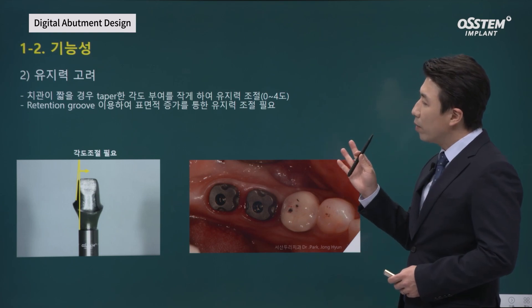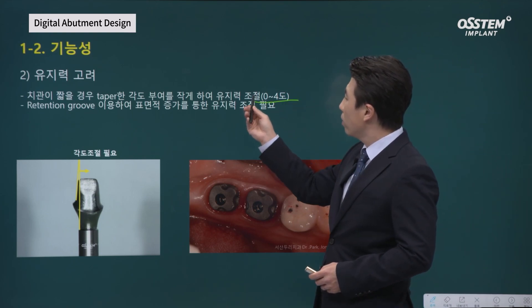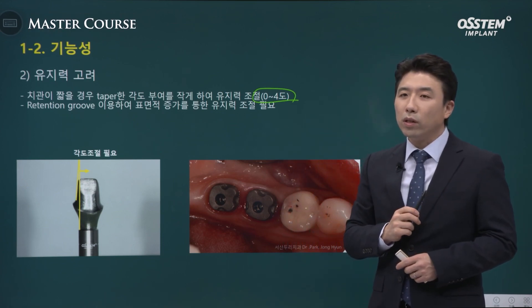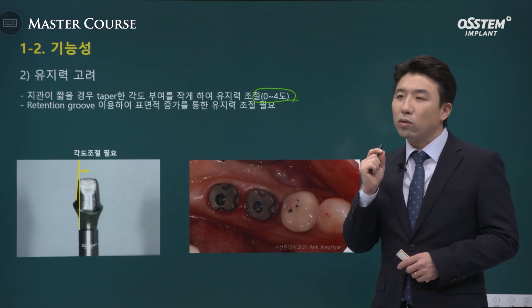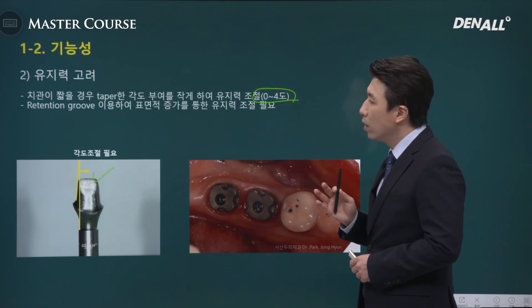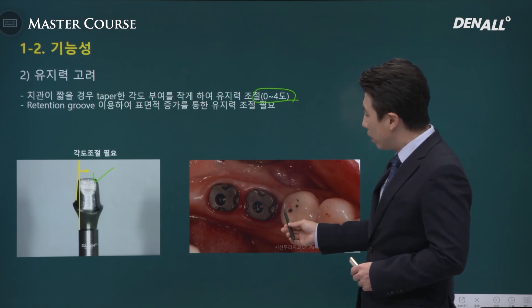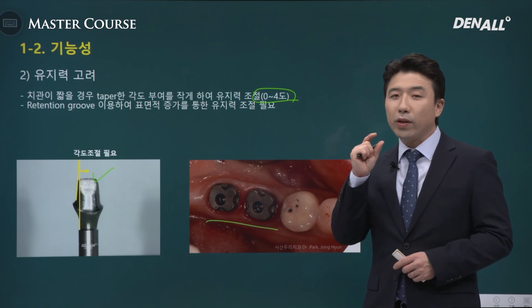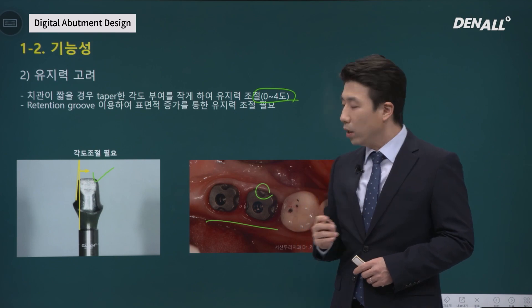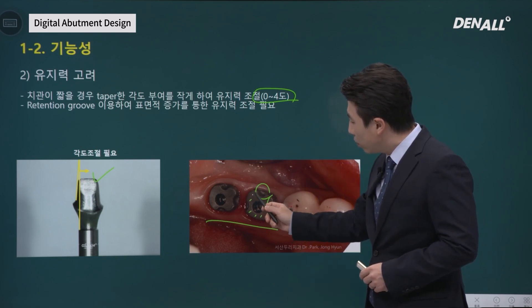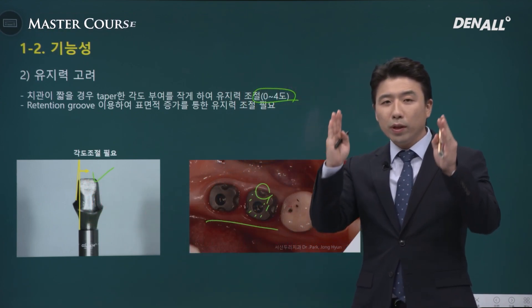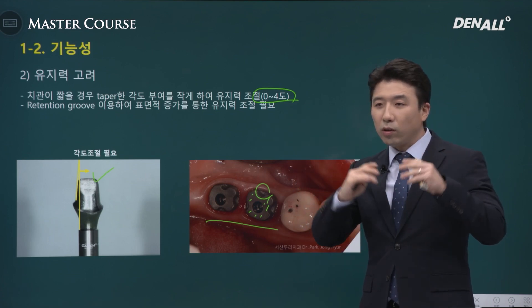Moving on to the angle — it is said to range from 0 to 4 degrees, but 0 degrees goes in at a straight right angle, and even with the smallest error, the crown will not fit properly. Therefore, 0 degrees is impossible. In the case of an abutment with a significantly low height, we can provide a retention groove, and the surface is sandblasted to reduce the angle slightly.